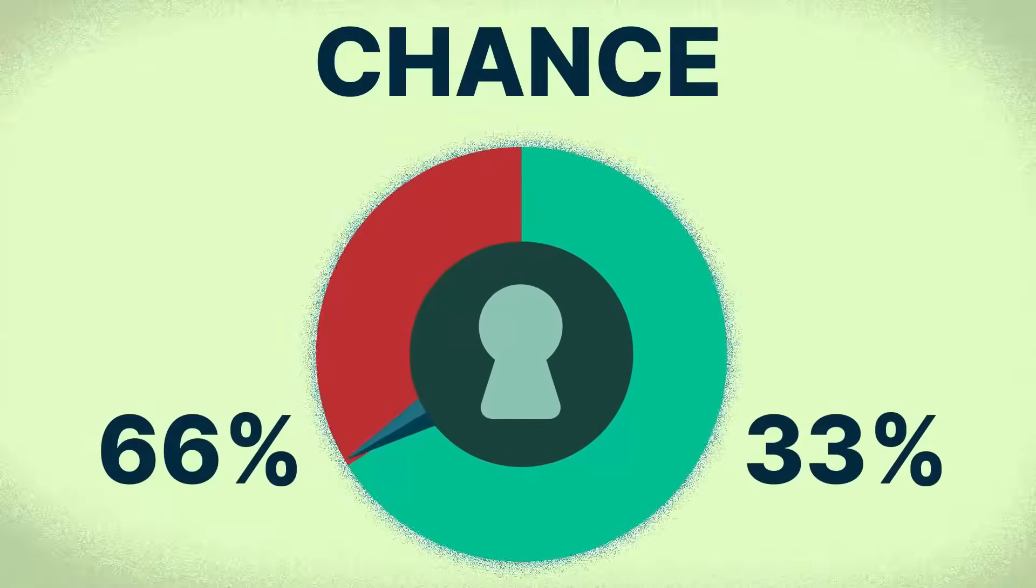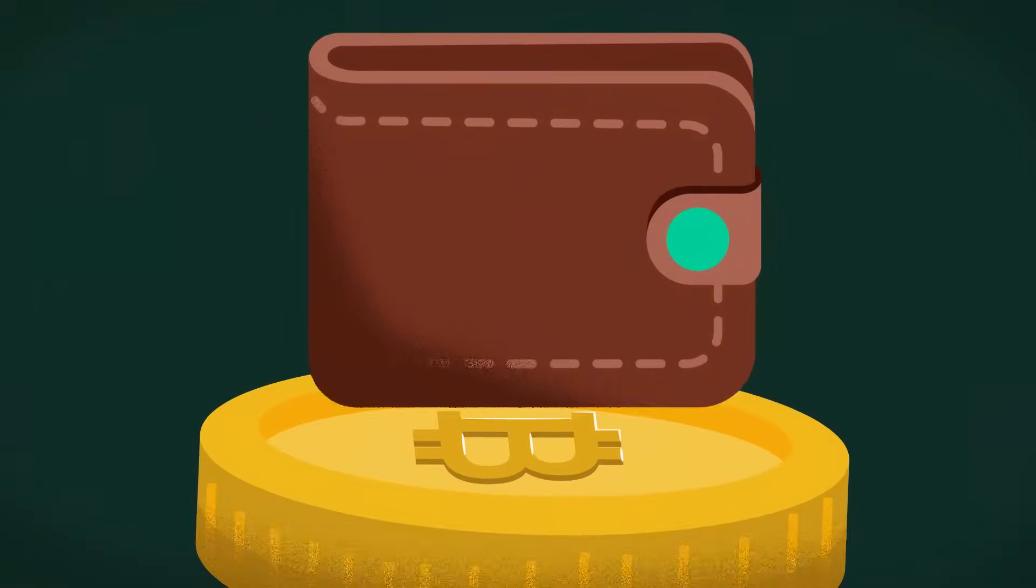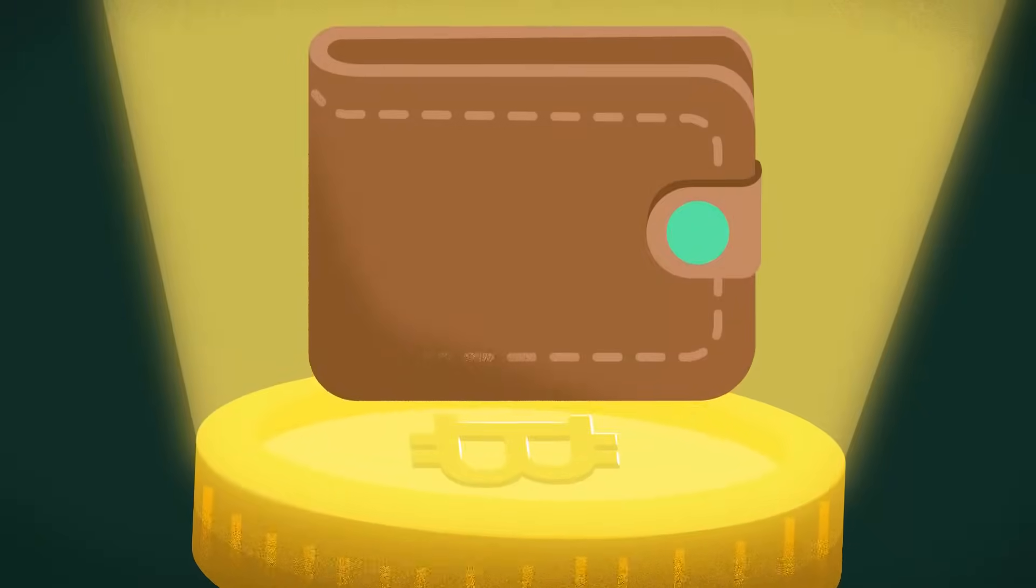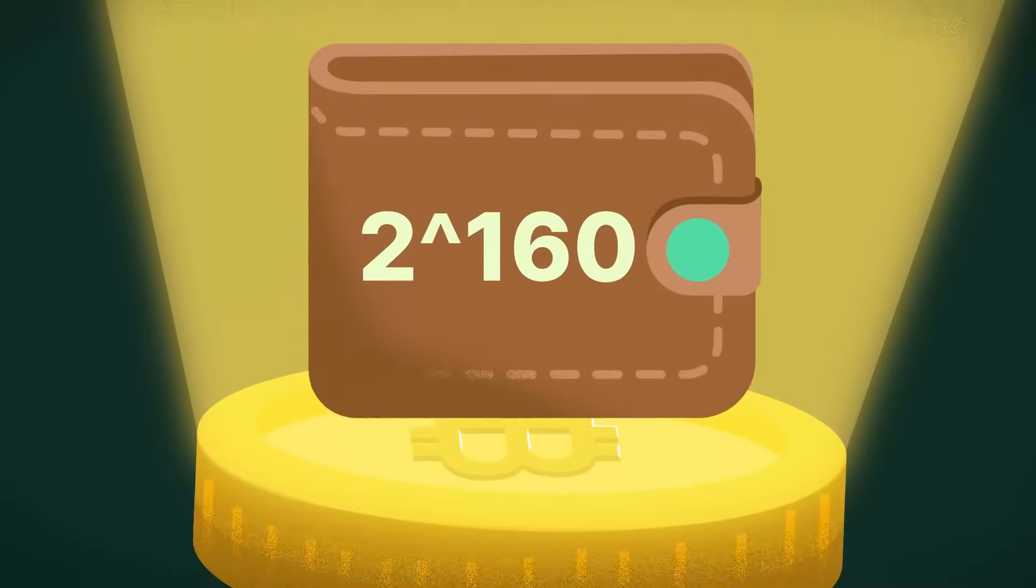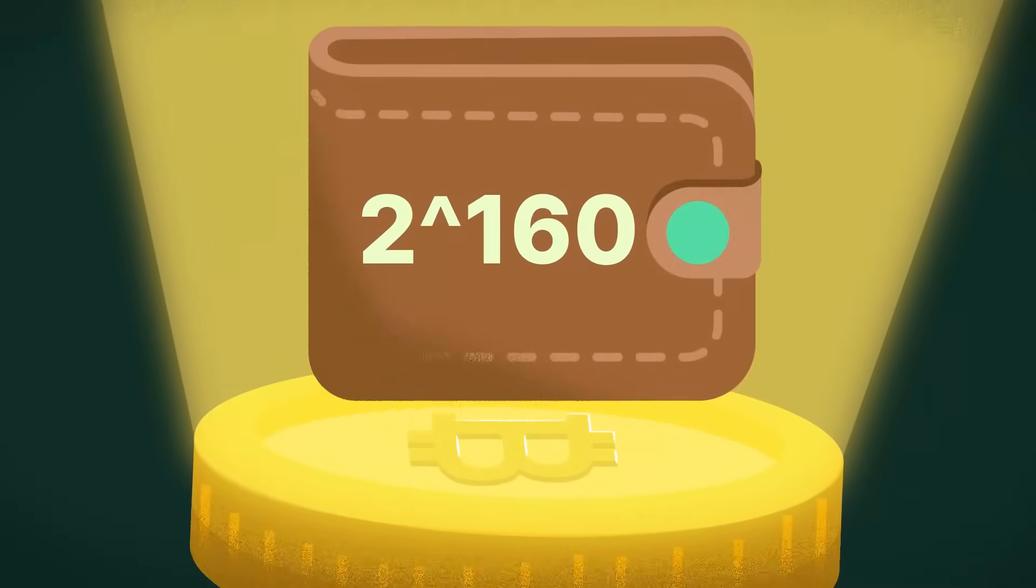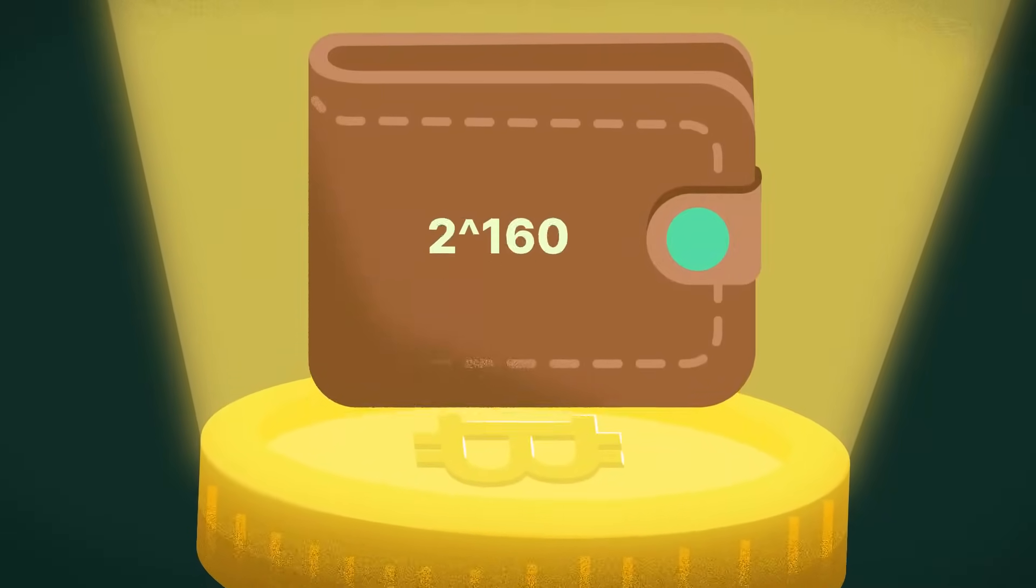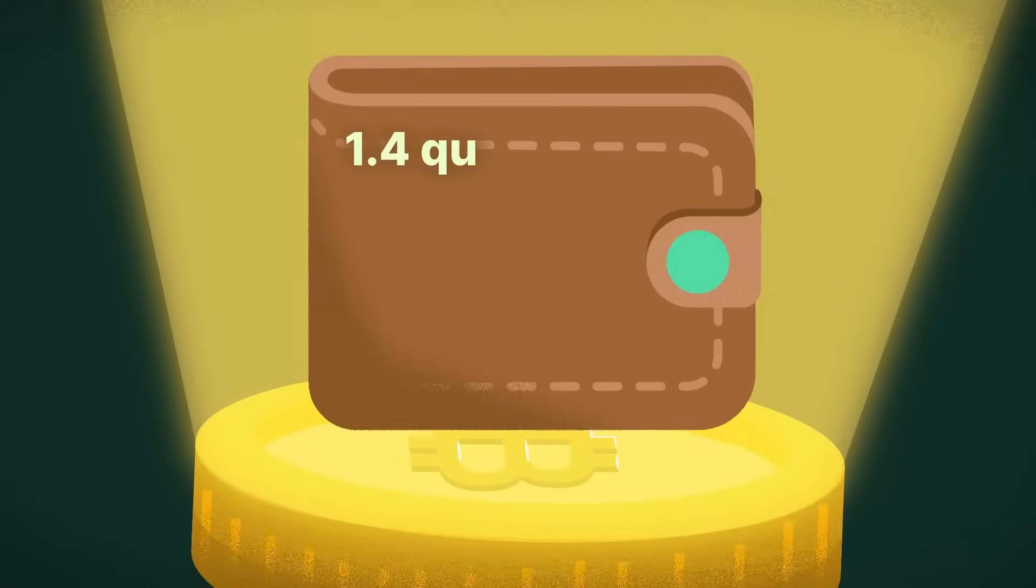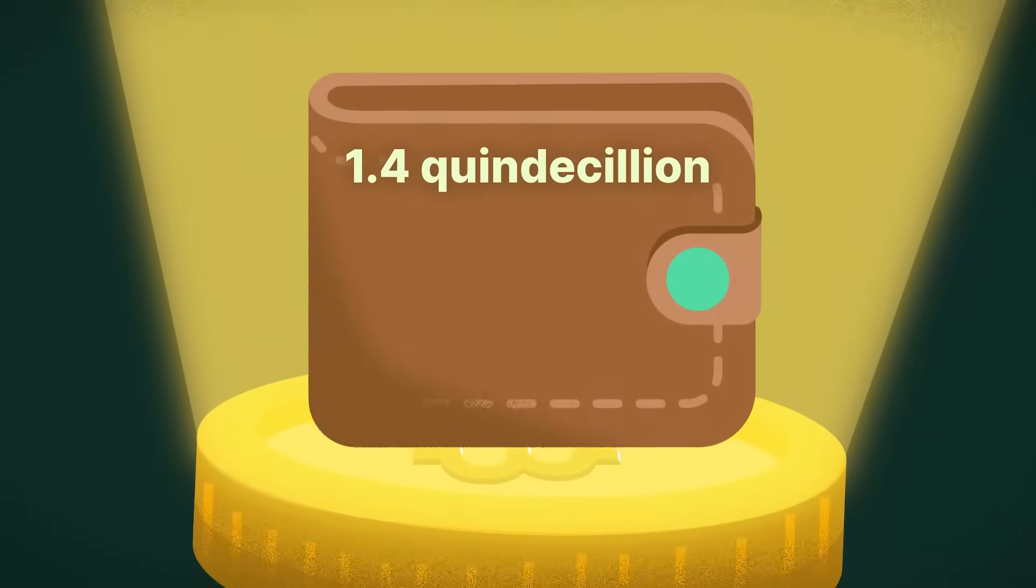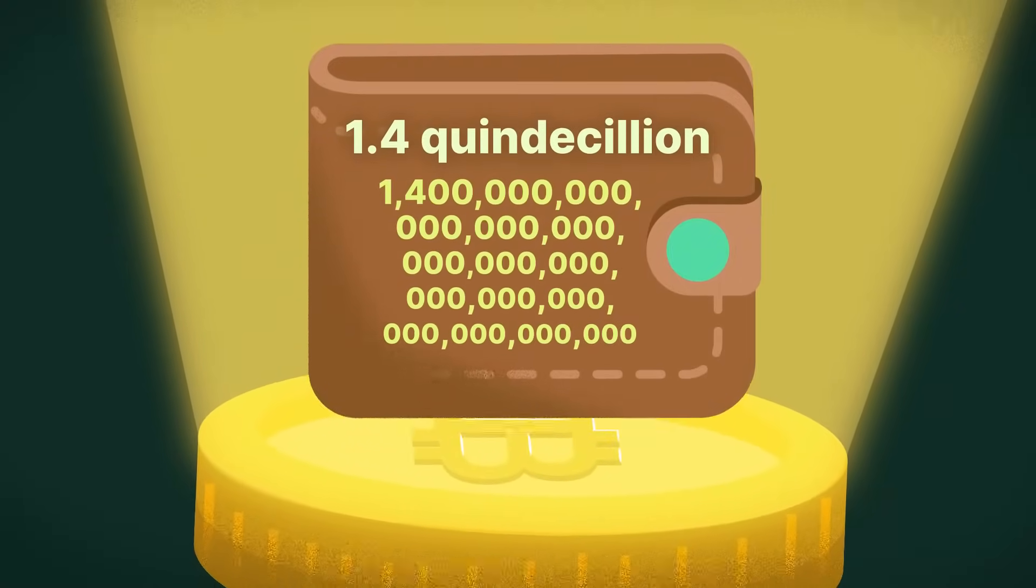But how likely is it? On Bitcoin, the total number of possible wallet addresses is 2 to the power of 160. This means the odds of someone generating the same private key as yours is 1 in 1.4 quindecillion, or 14 with 47 zeros after it.